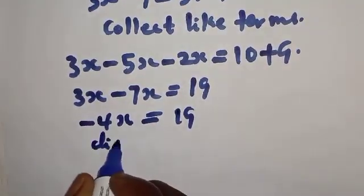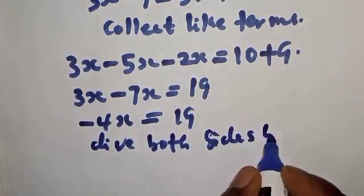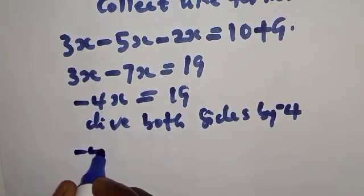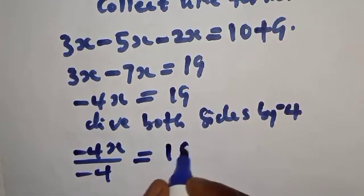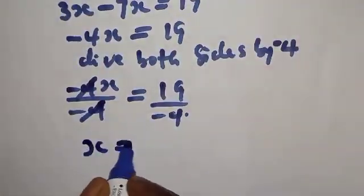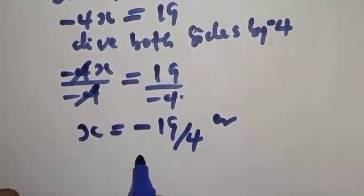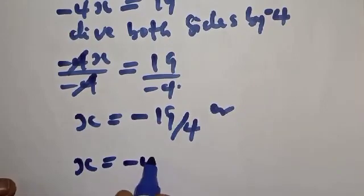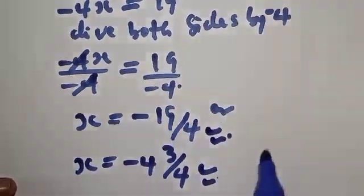So we have minus 4x equal to 19. Now we divide both sides by minus 4. That gives minus 4x over minus 4 on the left, and 19 over minus 4 on the right. Therefore x is equal to minus 19 over 4, which is our final answer.